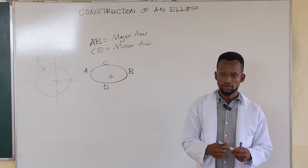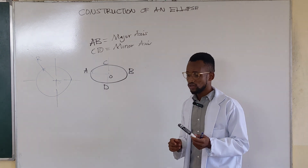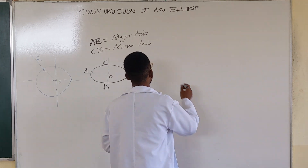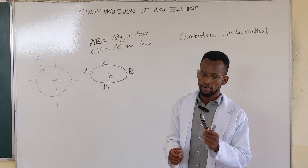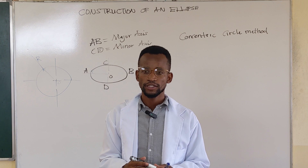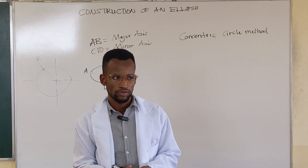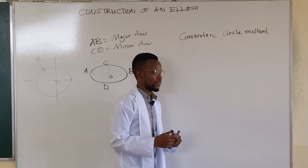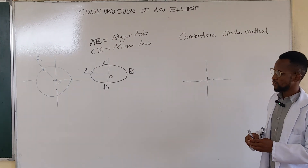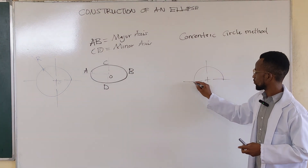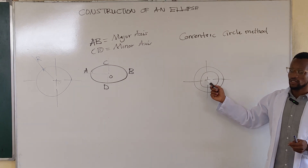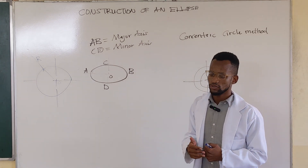That's the difference between the ellipse and the circle. We're going to concentrate on the concentric circle method. When we talk of concentric circles, we're talking of two or more circles that are different but share the same center — two different circles that have a common center. As long as they share the same center, they are called concentric circles.